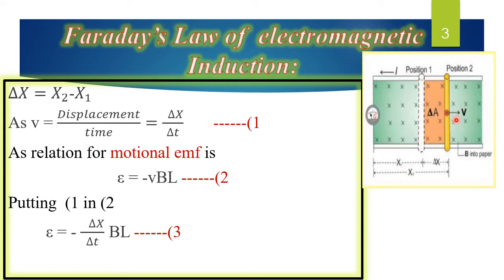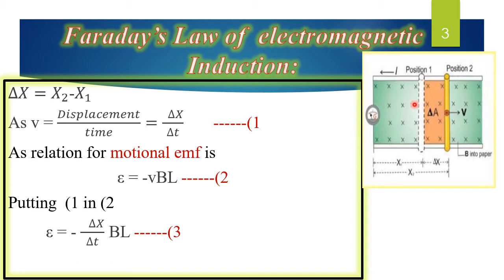After some time, we move this conductor with velocity v in this direction. When the conductor moves with velocity v, it covers some distance represented as delta x. As the conductor moves, its position changes; the new position is represented as x2. The distance covered is x2 minus x1. Due to the conductor's motion, the magnetic flux changes here, which induces an EMF, and due to this induced EMF, a current is induced.